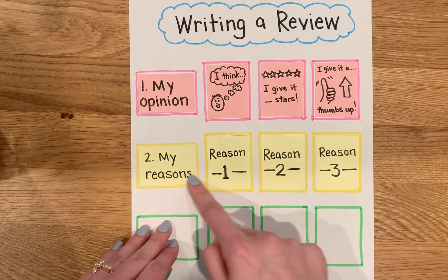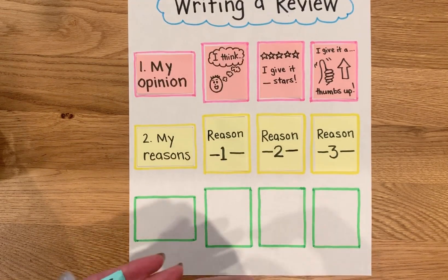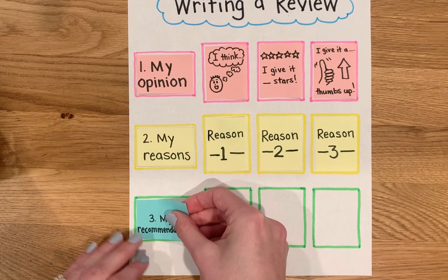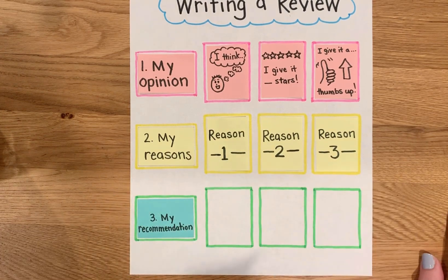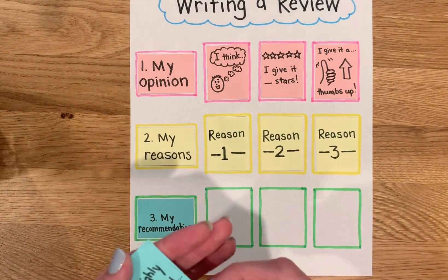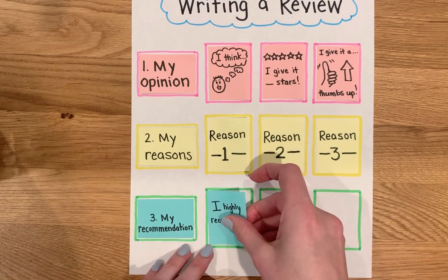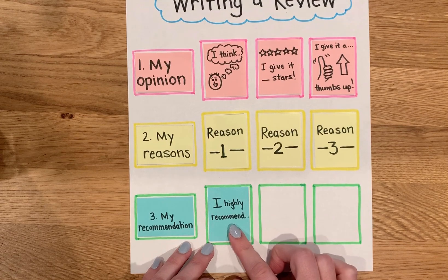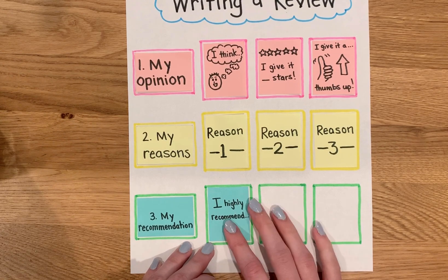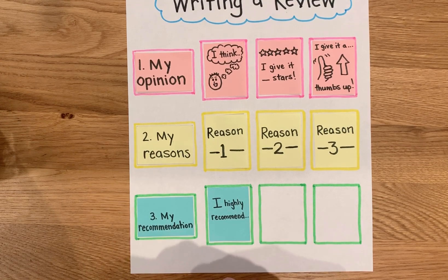So we have our opinion and our reasons, and then the last thing we like to do is end with a recommendation. A recommendation means you're giving somebody else an idea of what to do about what they've just read. You're going to recommend that whoever's reading this goes to the restaurant you're talking about, or downloads the game you're talking about. If it's not a good review, you can say, "I highly recommend you don't download this game" or "I highly recommend you skip this book."